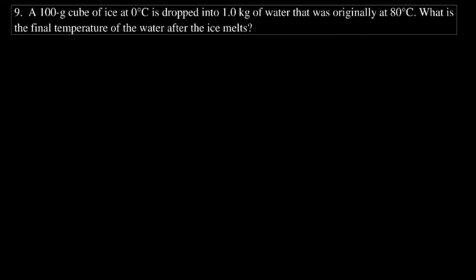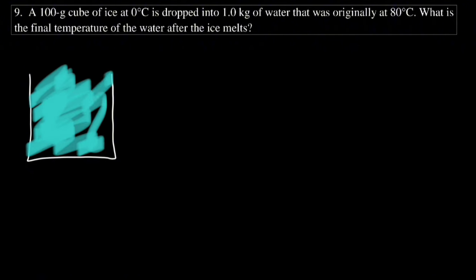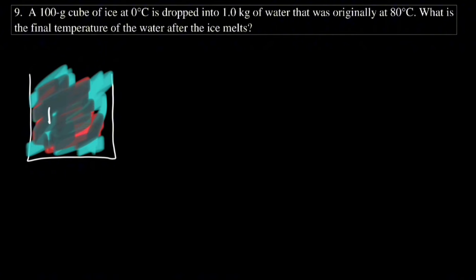Now we deal with latent heat and phase changes. The question: 100 grams of ice at 0 degrees Celsius is dropped into 1 kilogram of water originally at 80 degrees Celsius. What is the final temperature of the water after the ice melts?